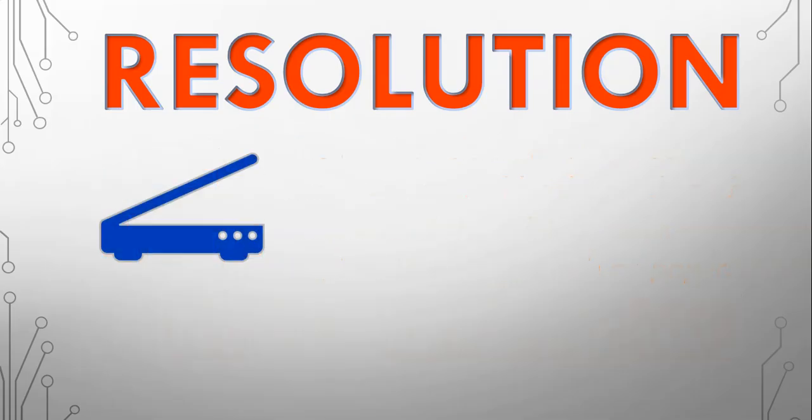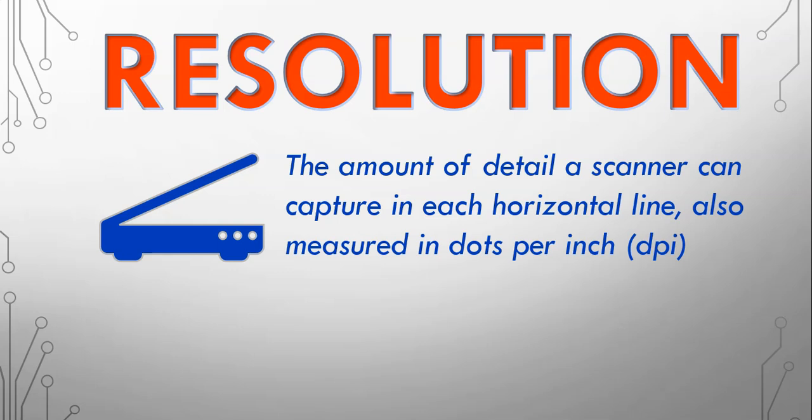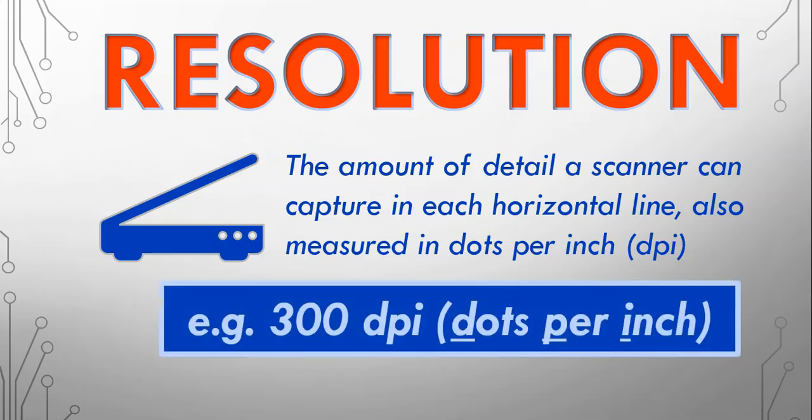When it comes to scanners, it's very similar. The amount of detail scanner can capture in a horizontal line and this is also measured in dots per inch. So the higher the value, the more clearer the image that is going to be scanned.